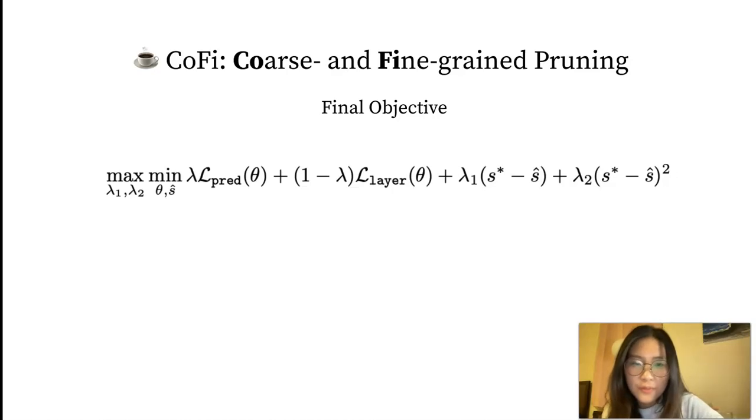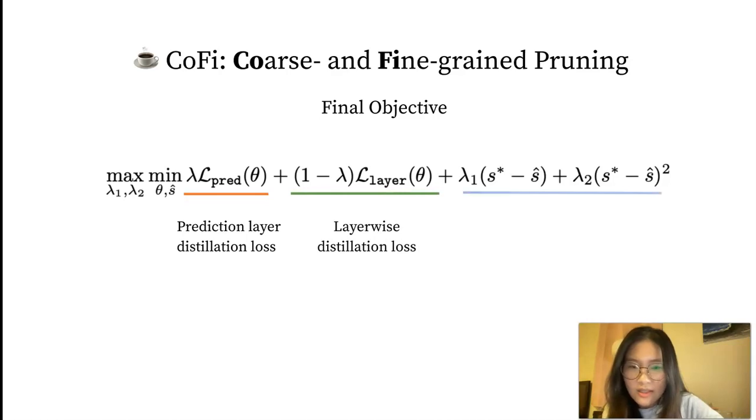Here we have our final objective for pruning. We have a prediction layer distillation loss, a layer-wise distillation loss, and a Lagrangian loss to control the sparsity.